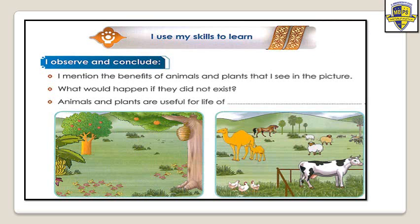And here, grade one, there are two pictures I want you to observe and conclude. I will mention the benefits of animals and plants that I see in the picture. Here there are many animals like camel, horse, sheep, cow, and hens. What are some benefits of these animals? Milk. Excellent. What else? Meat. Eggs. And clothes. And we use horse and camel in the past for transportation — to move from one place to another.